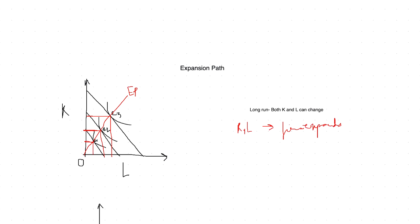Now let's understand the expansion path in the short run. Everything discussed so far is in the long run, because both capital and labor are changing. But now let me assume one input is kept constant — let me keep capital constant at K1. So in the short run, E1 is the point of equilibrium for output level Q. However, in E1 the capital used is much less than K1, but since capital is fixed in the short run, you cannot reduce the capital level. So to produce this Q level of output, extending along the isoquant, K1 is constant and a certain amount of labor is required.